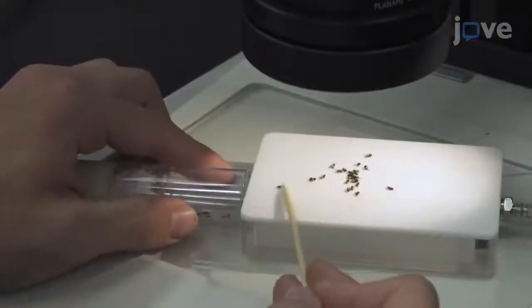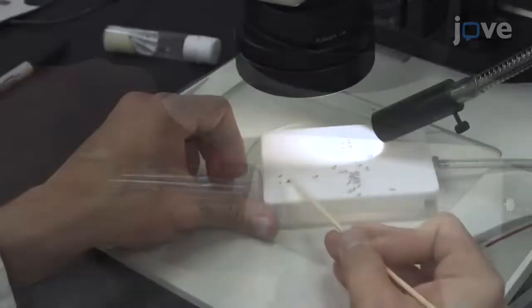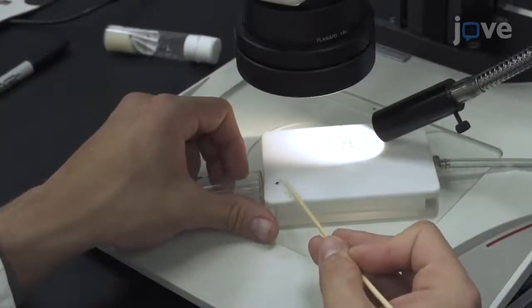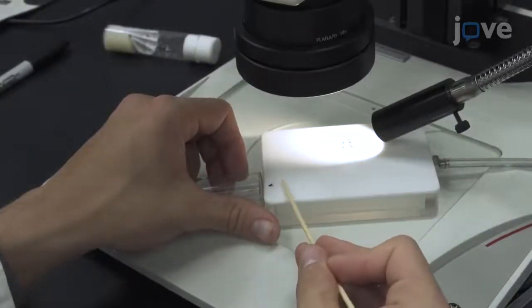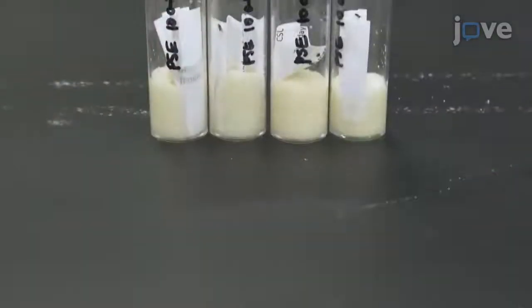To set up the culture from which to collect experimental animals, transfer the reproductive adults to the growth medium using standard methods. Standardize the number of flies per vial and avoid overcrowding the adults.